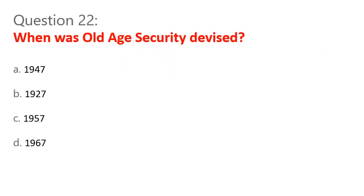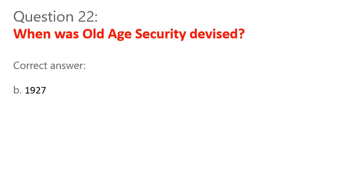Question 22. When was old age security devised? A. 1947. B. 1927. C. 1957. D. 1967. Correct answer: B. 1927.